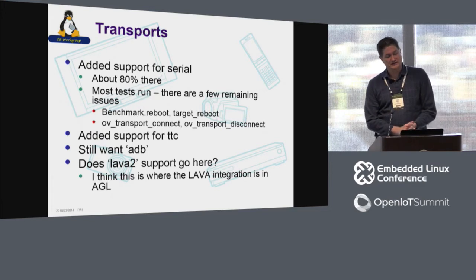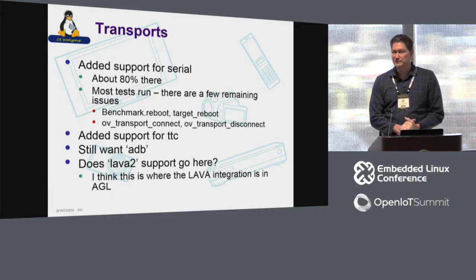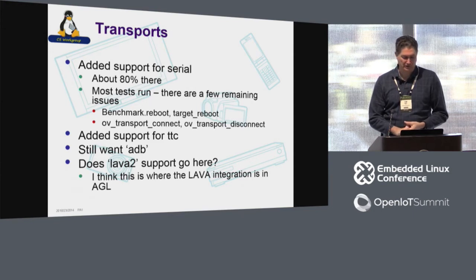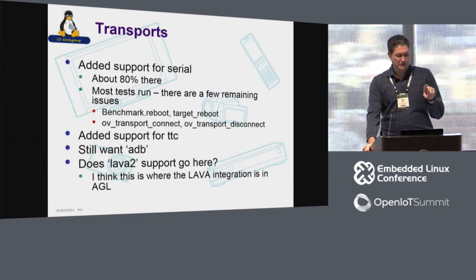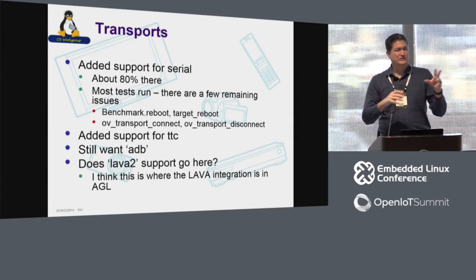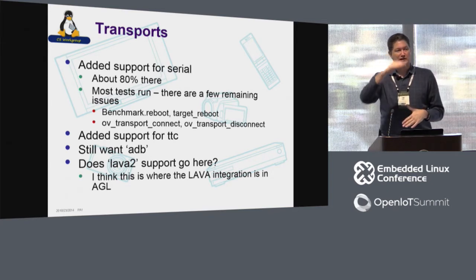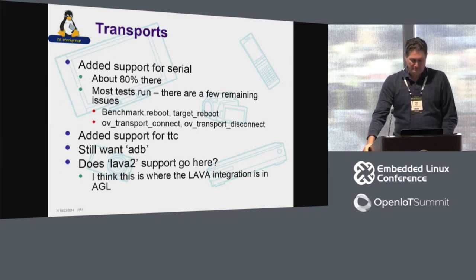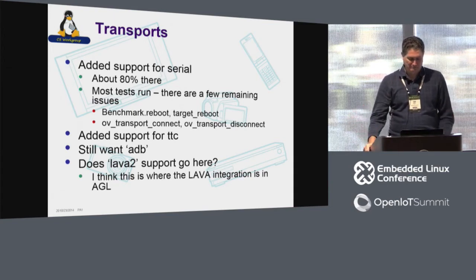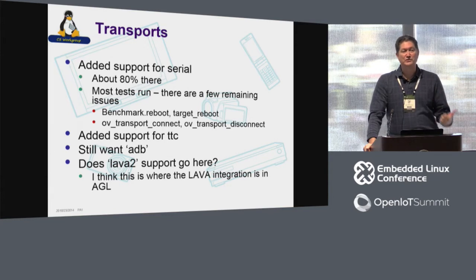On transports: serial port support is about 80% there. You can run most of the tests now, but there are a couple that have timeout issues because it takes a lot longer to transfer large files over the serial port, and reboot has issues. I think we're going to get a two-for-one here if we do the Lava integration the way I think we should — adding an OV transport connect and an OV transport disconnect instead of using the hook that's in there now. That will make it a much more official transport layer, and that's what we need to get the serial port to handle reboot as well. I also still really want ADB support — I think we're really close and it wouldn't be much work to add it.